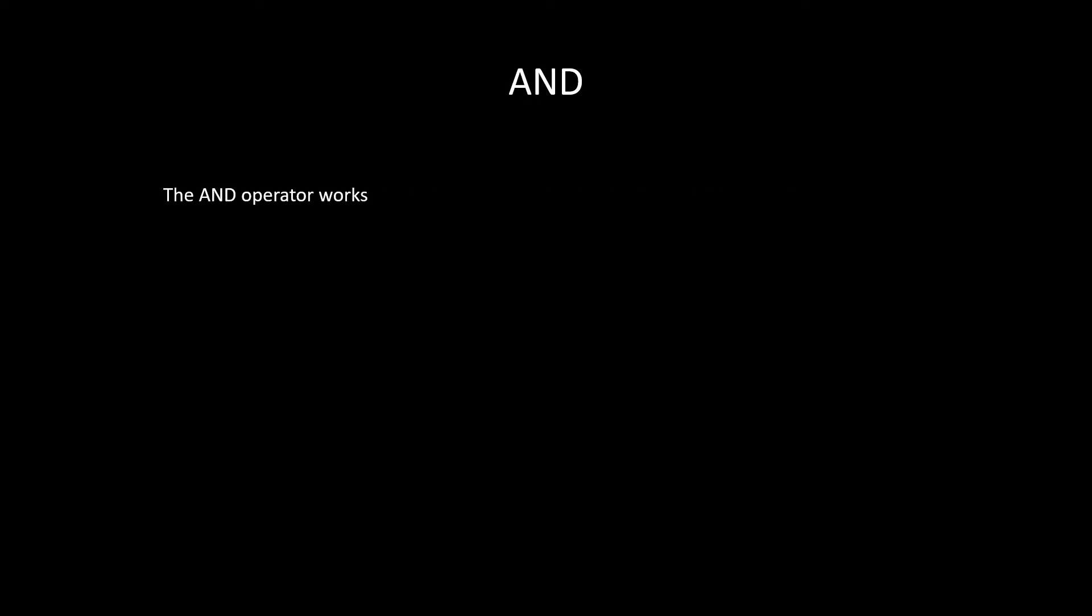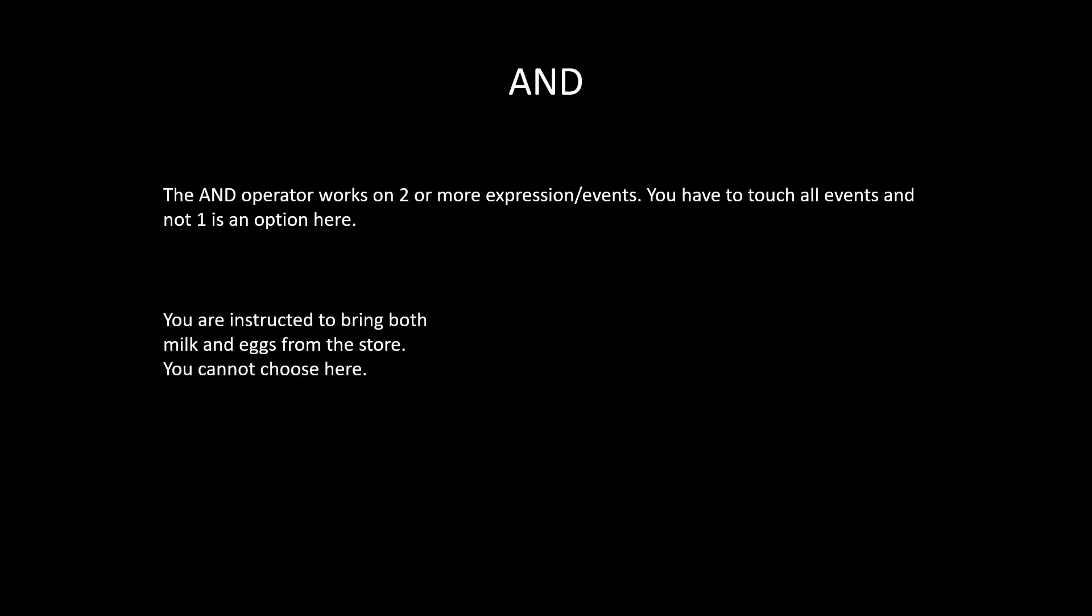The AND operator works on two or more expressions or events. You have to touch all the events and not one is an option here. It means that in the first example you're instructed to bring both milk and eggs from the store - you cannot choose here. In the second example you're requested to both like and subscribe the video, and you're not given a choice between the two.